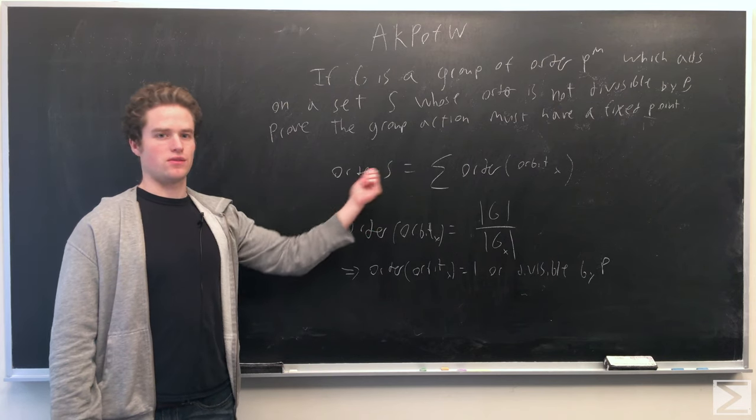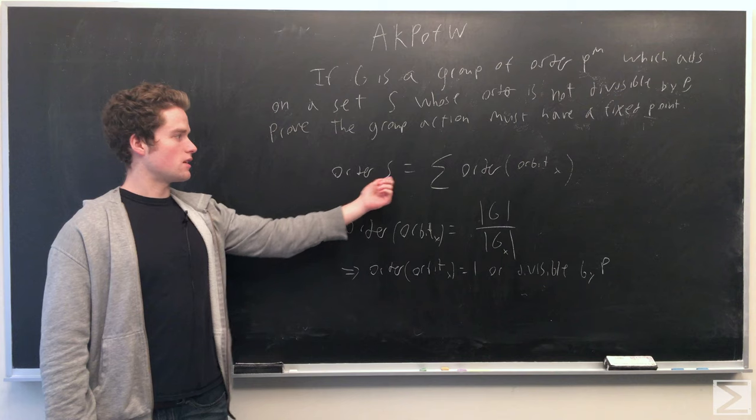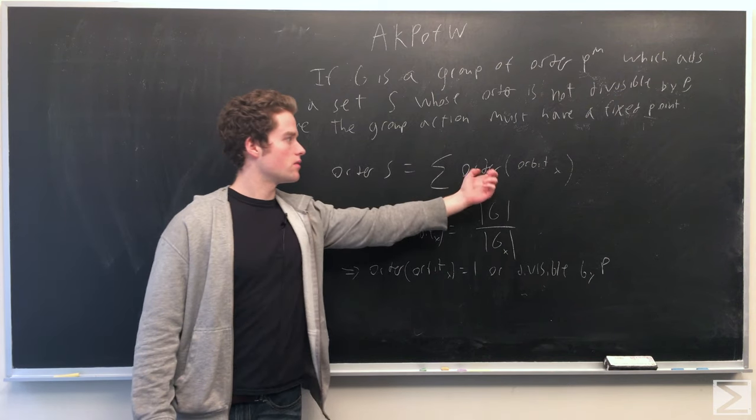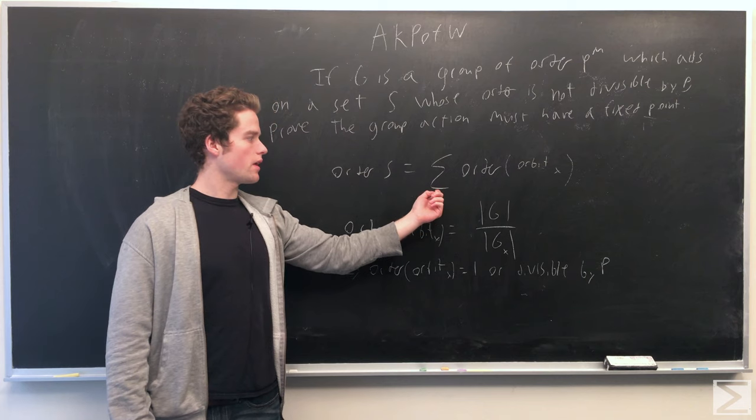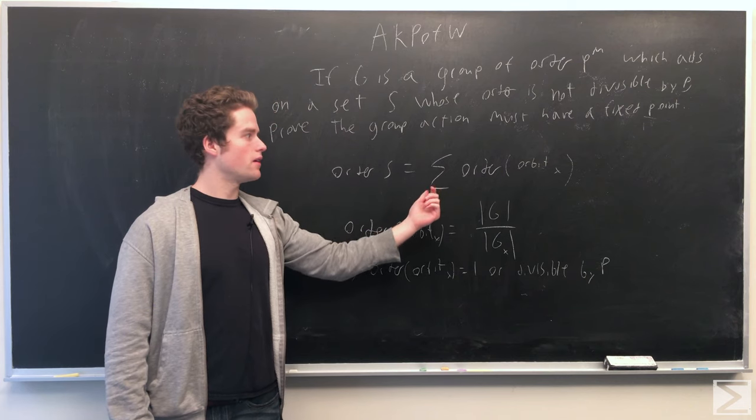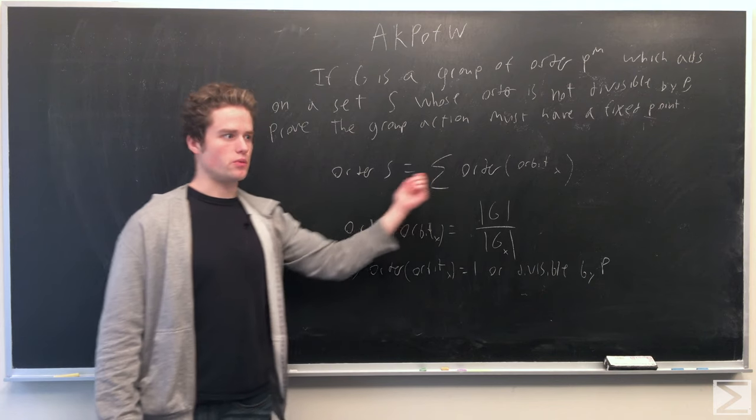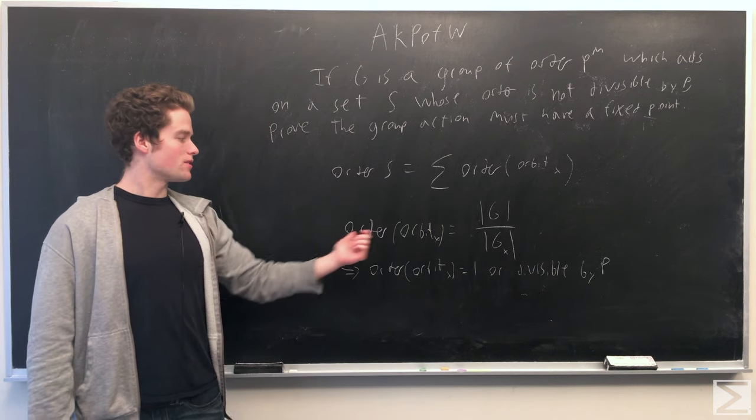And so we can divide up S into all these different orbits. And so the order of S equals the sum of the order of all these different orbits. So we take one x in each orbit, say the orbit of that element x, and the sum of all these orders will give us the order of S.